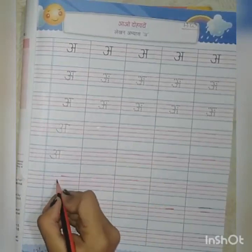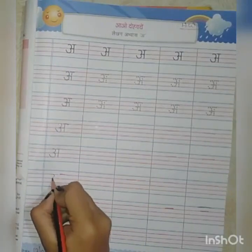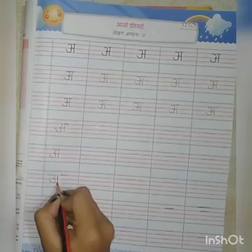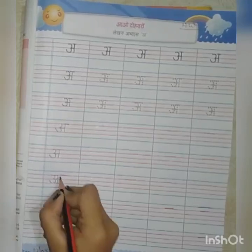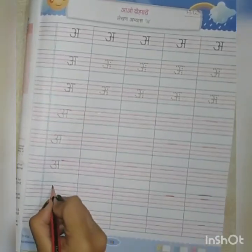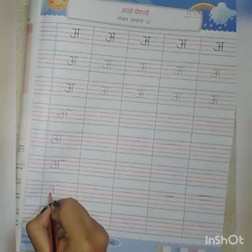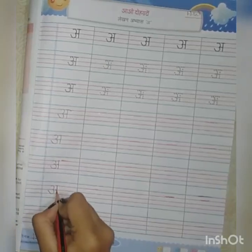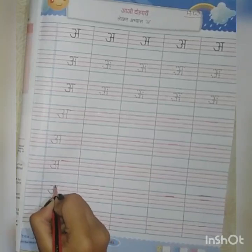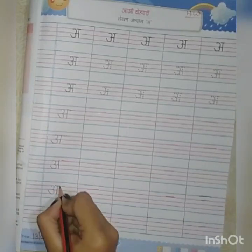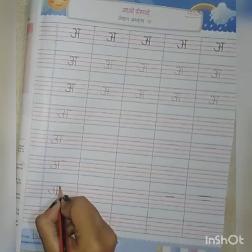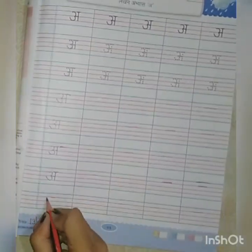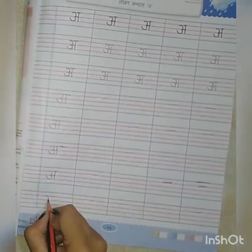See, class. See how you can make it. Sleeping line, standing line and then sleeping line, standing line and standing line. See class, see how you can make it.